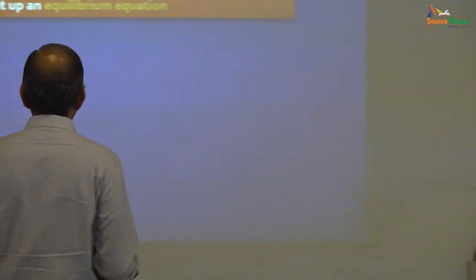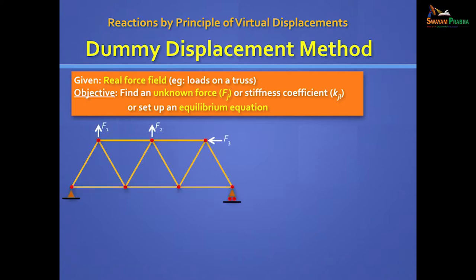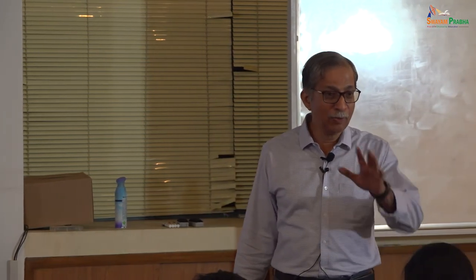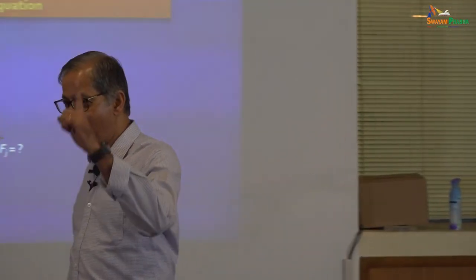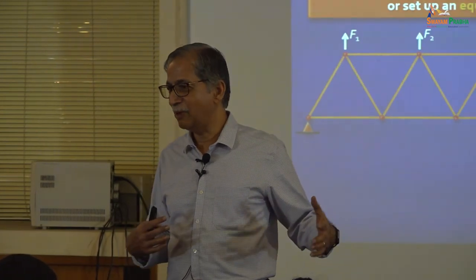Use the principle of virtual displacements to find unknown forces, and the principle of virtual forces to find unknown displacements. Right now we will only talk of finding an unknown force — specifically a support reaction. Take a truss with three forces F1, F2, F3, and you are interested in finding the reaction at the right support. Normally you would use sigma Fx equals zero and sigma moments about a point — but instead we use the principle of virtual work.